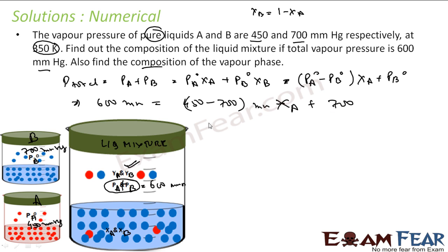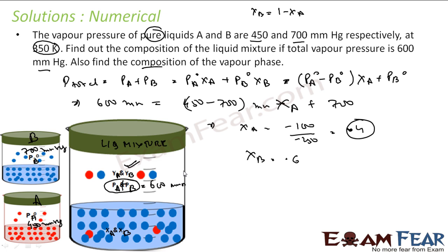Solving this equation: XA = (600 − 700) / (450 − 700) = (−100) / (−250) = 0.4. So XA = 0.4 and XB = 0.6. This is required because with these mole fractions in the liquid phase, we can now find PA and PB.